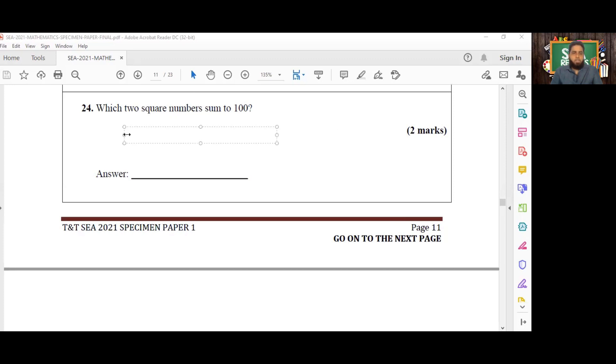The square numbers, if we use our counting numbers and multiply them by themselves, so example 1 by 1 or 1 squared, 2 by 2 or 2 squared, and so on, we'll get our list of square numbers.